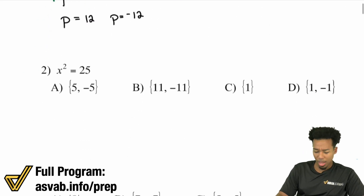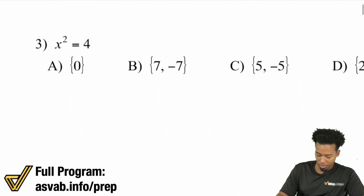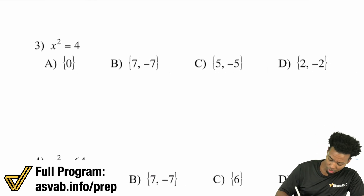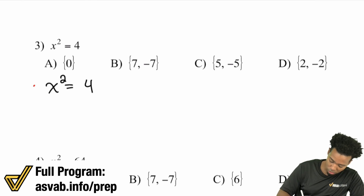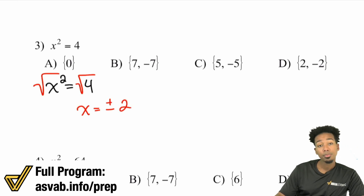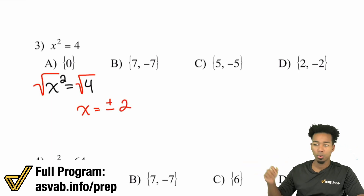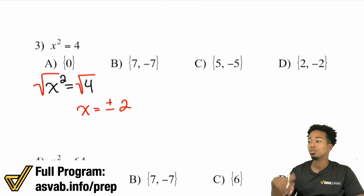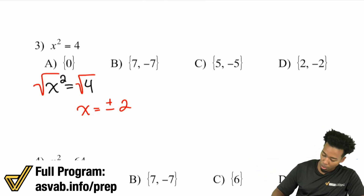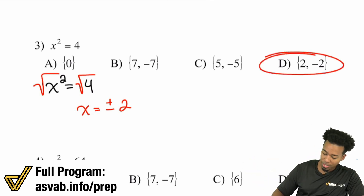That'll happen quite a bit. For example, x squared equals 4: take the square root of both sides, and you include positive and negative two. Two times two is four, and negative two times negative two is also four. Both of them work, and that's why D is the answer.